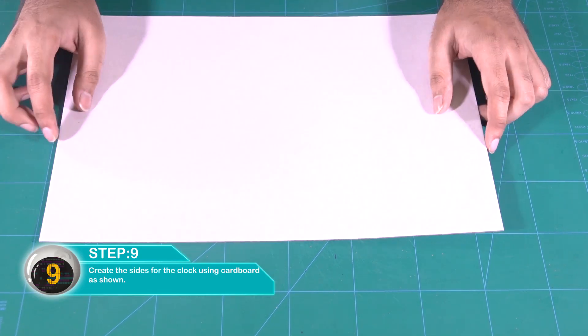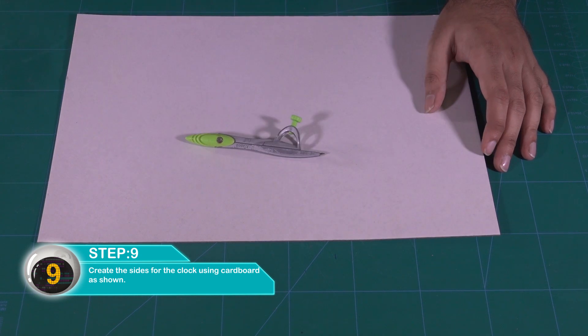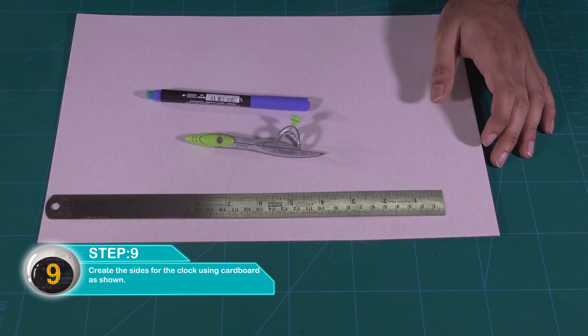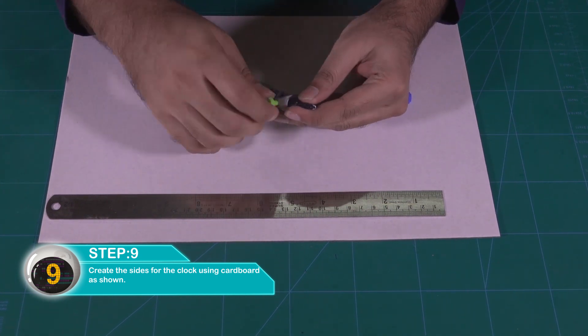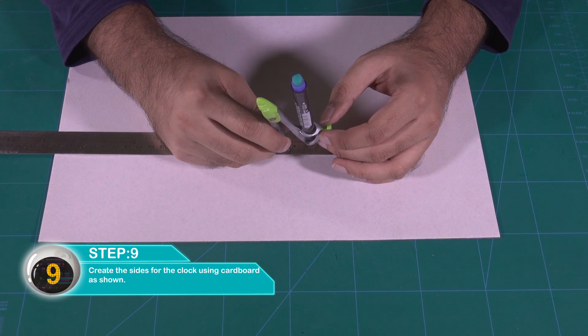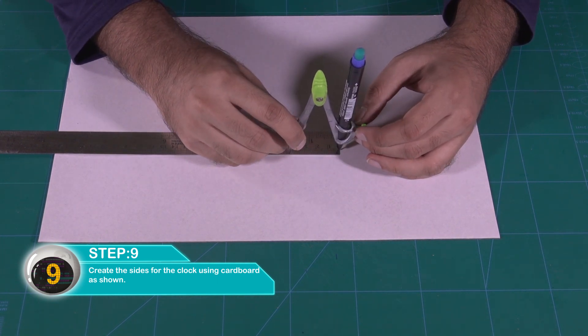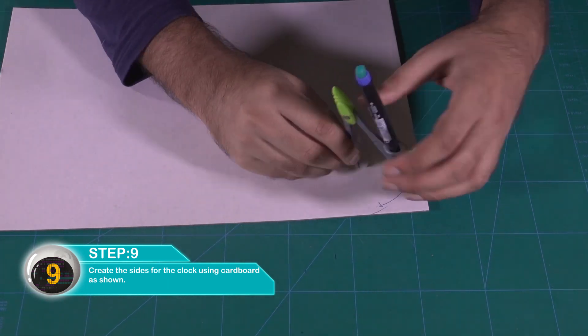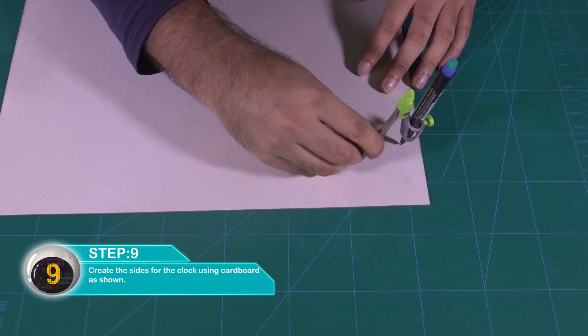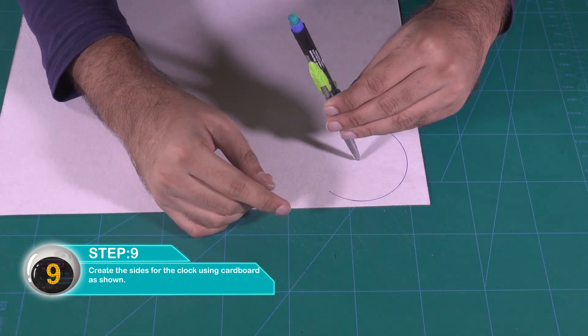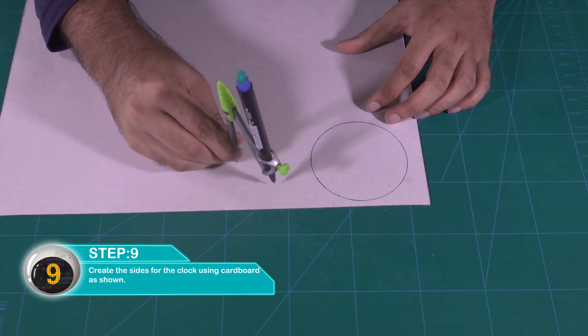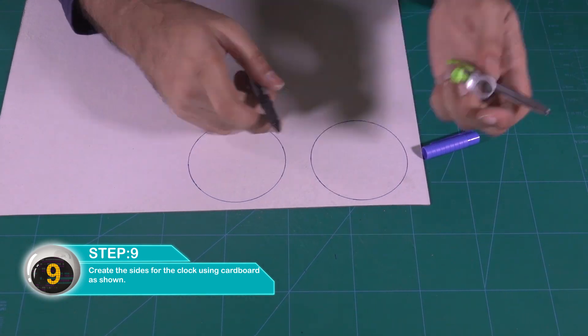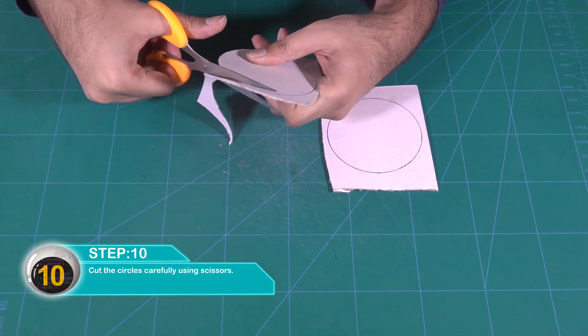Create the sides of the clock using cardboard as shown. Cut the circles carefully using scissors.